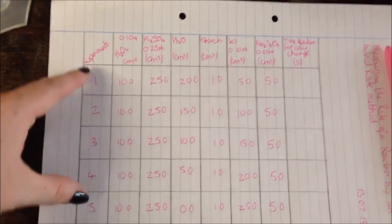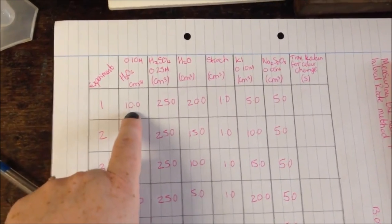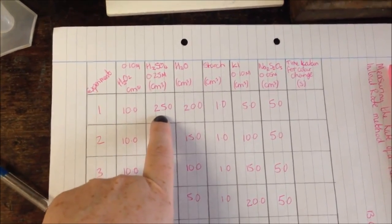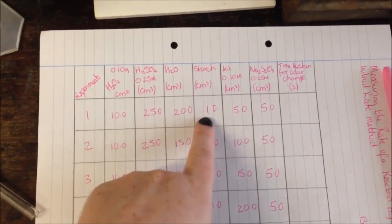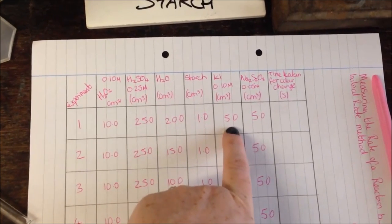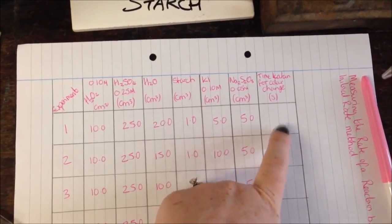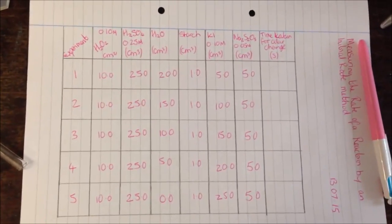The first thing I've done is I've drawn out my table with the experiment numbers and the amounts that I need in the order that I'm going to be using them. First, we're going to have 10cm³ of hydrogen peroxide, 25cm³ of sulfuric acid, 20cm³ of water, 1cm³ of starch, 5cm³ of potassium iodide, 5cm³ of sodium thiosulfate, and then we're going to mix all together and measure the time taken for a colour change.